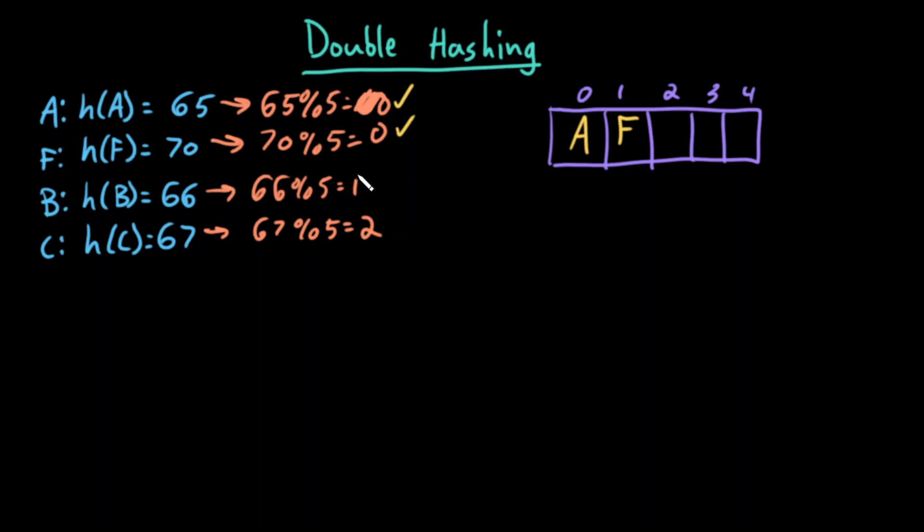What about B? I go to index 1 - uh-oh, something's already there. I move 1 over, so now it goes here. And before I insert C, let's actually reflect on this.